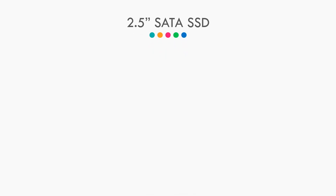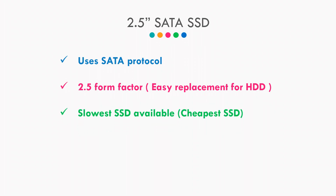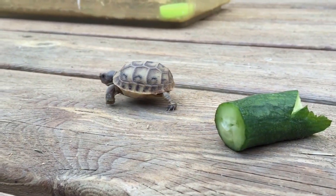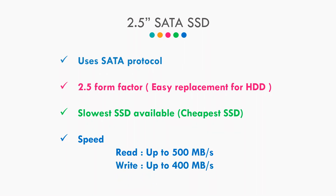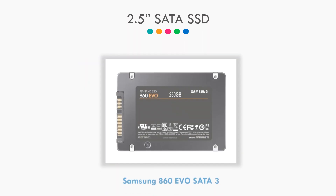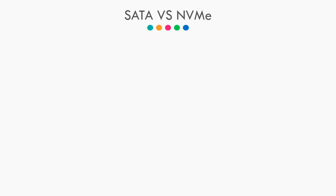Lastly, we have 2.5 SATA, which is also based on the SATA protocol and comes in the 2.5 form factor. Laptop HDDs also use the 2.5 form factor, so 2.5 SATA is used to easily replace a traditional hard drive. Since it uses SATA it is slower — in fact even slower than SATA M.2. The read speed goes up to 500 Mbps whereas the write speed goes up to 400 Mbps, which is not that far from SATA M.2. An example is the Samsung 860 EVO SATA 3.